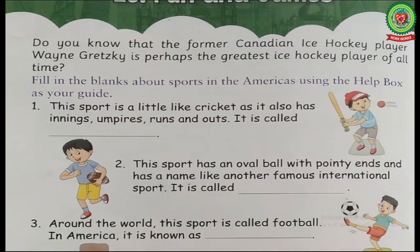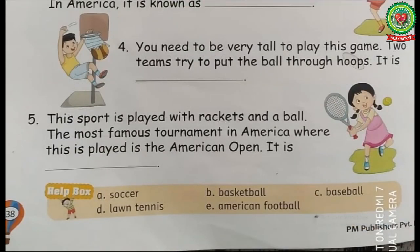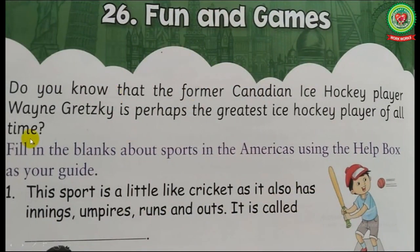Now students, in this chapter we will learn about the sports in America. But before starting with the reading, we will discuss the difficult words. Number one is 'former' — first. Number two is 'innings' — the period in a game in which a team bats. Number three is 'pointy' — having a sharp point. Number four is 'hoops' — a ring of a basket. And the last one is 'tournament' — a sports event.